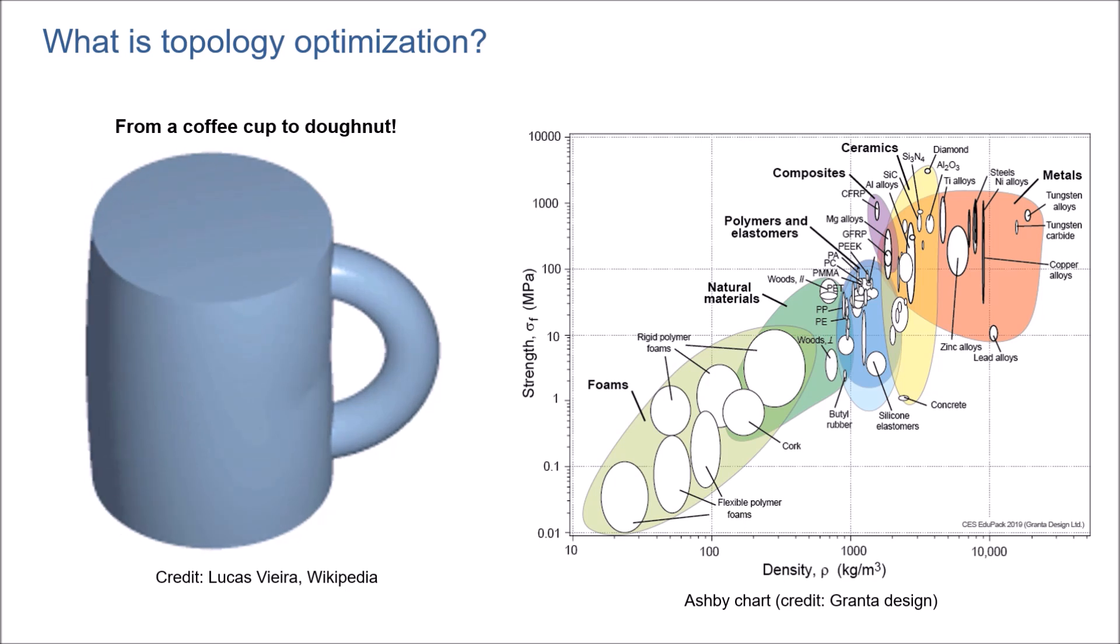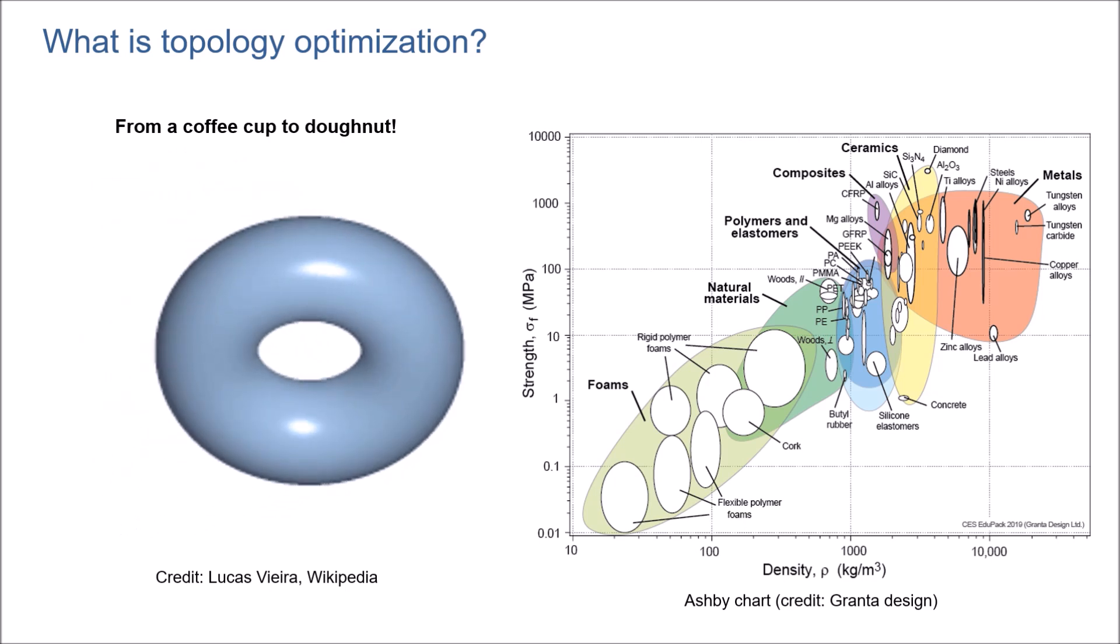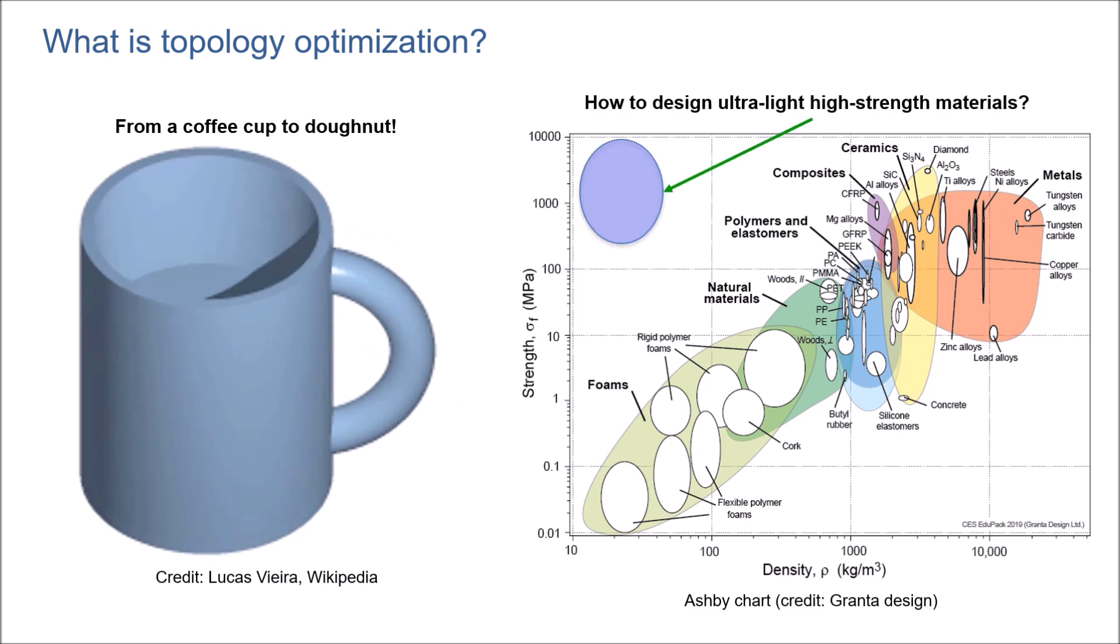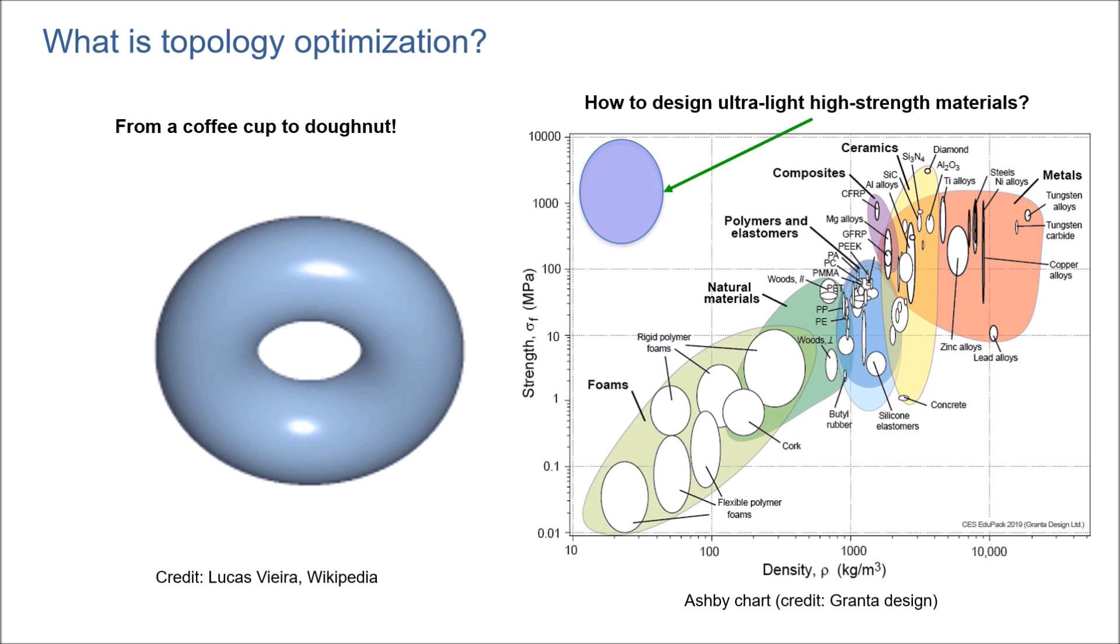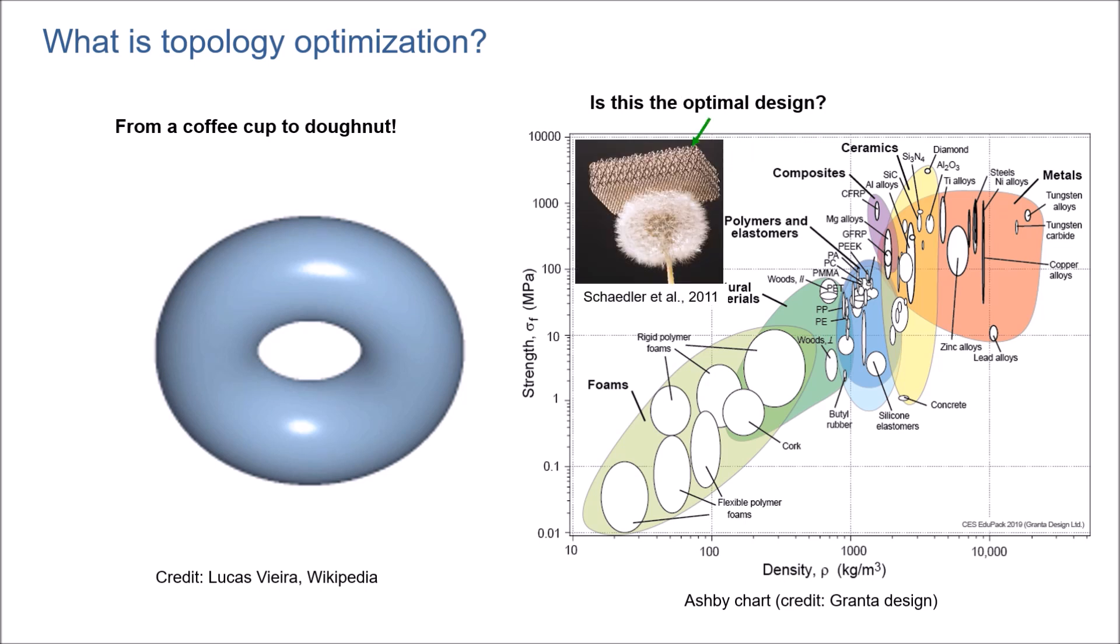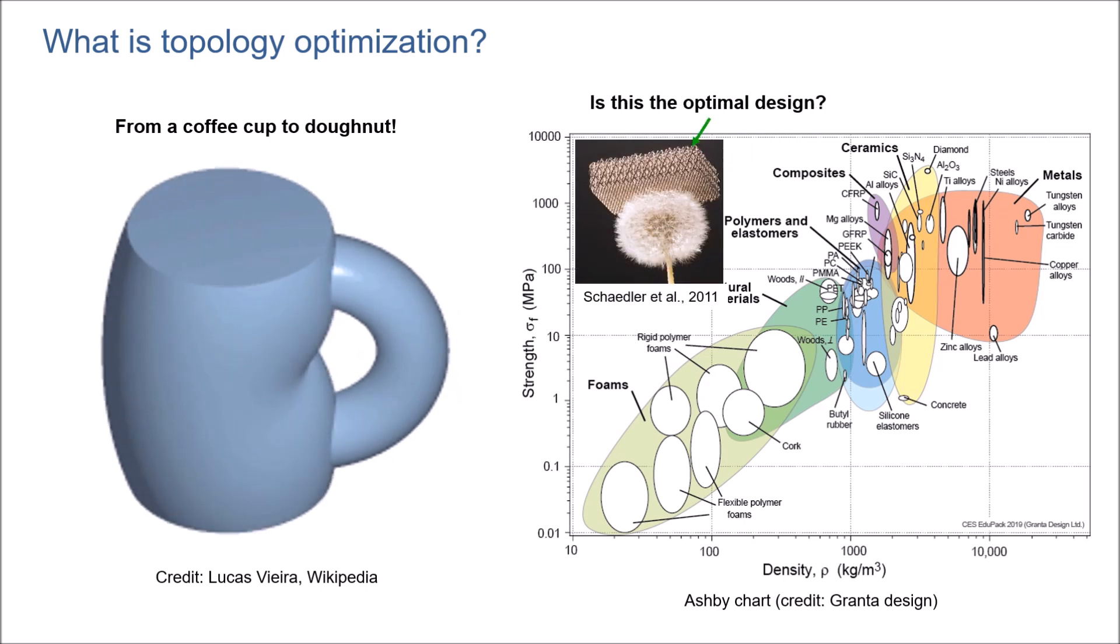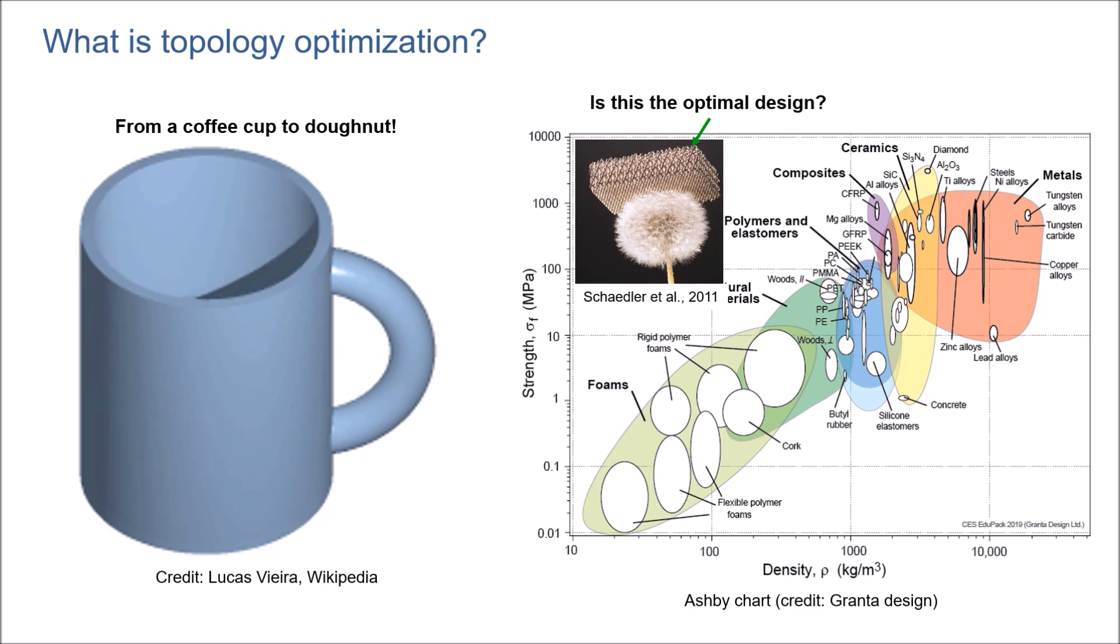Let's say you're asking me if topology optimization is the perfect method. Can you give me the lightest material with the highest strength? Let's say this area of the chart. How to design ultralight, high-strength material. The answer is yes. Of course, researchers have developed this kind of ultralight, high-strength material called micro-lattice.